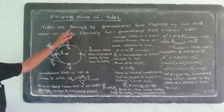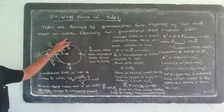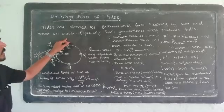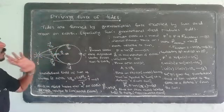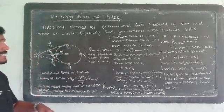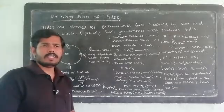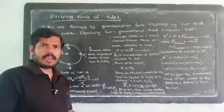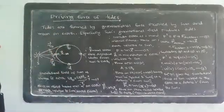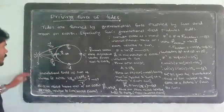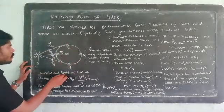Tides are formed by the gravitational force exerted by the sun and moon on the earth. The sun's gravitational field especially produces tides. We will now consider 4 points on the earth to analyze this.